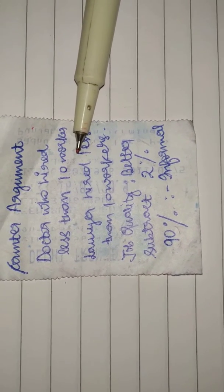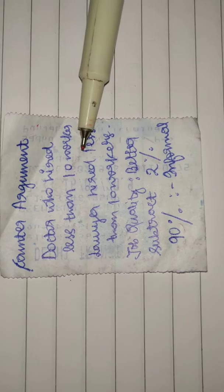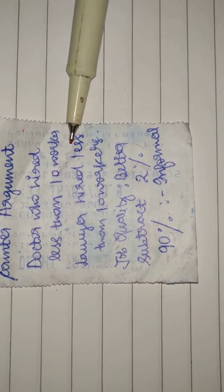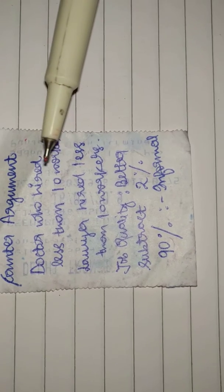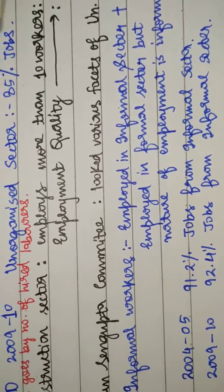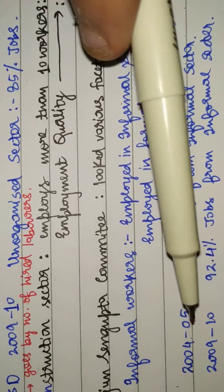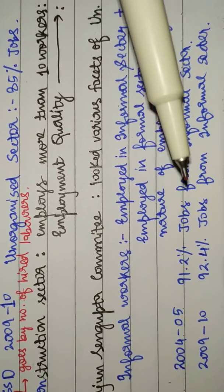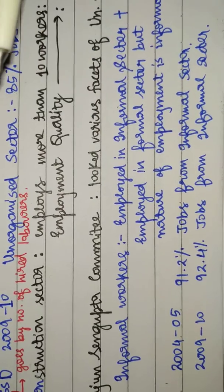So these elite class of doctors, lawyers, chartered accountants - even if we decrease it, at most it would decrease by two percent. So 2009-10, 92.4 minus 2, it would be roughly 90 percent jobs still from informal sector.